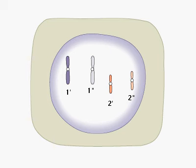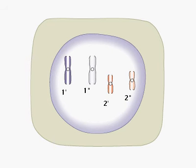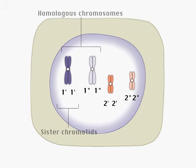This diploid cell contains two sets of two chromosomes. Meiosis is preceded by DNA synthesis. Each chromosome is replicated.